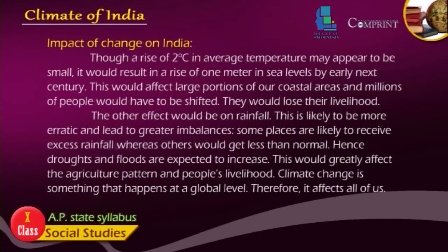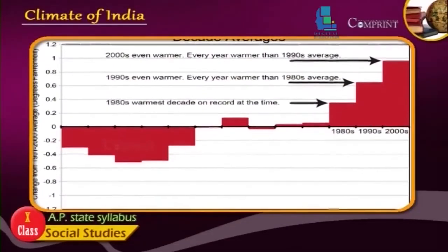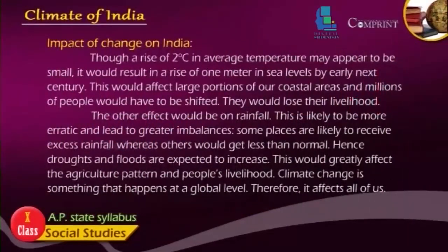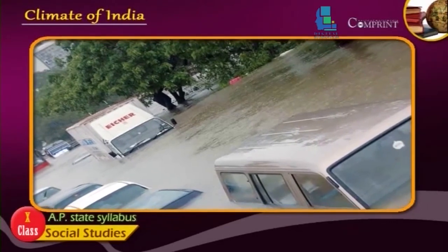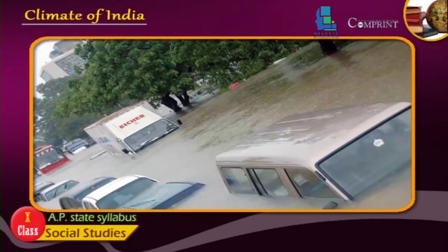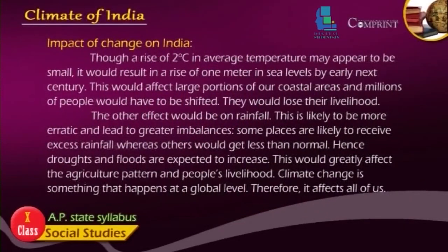Though a rise of 2 degrees Celsius in average temperature may appear to be small, it would result in a rise of 1 meter in sea levels by early next century. This would affect large portions of our coastal areas and millions of people would have to be shifted, losing their livelihood. The other effect would be on rainfall, which is likely to become more erratic and lead to greater imbalances. Some places are likely to receive excess rainfall whereas others would get less than normal. Hence, droughts and floods are expected to increase, greatly affecting agricultural patterns and people's livelihood.